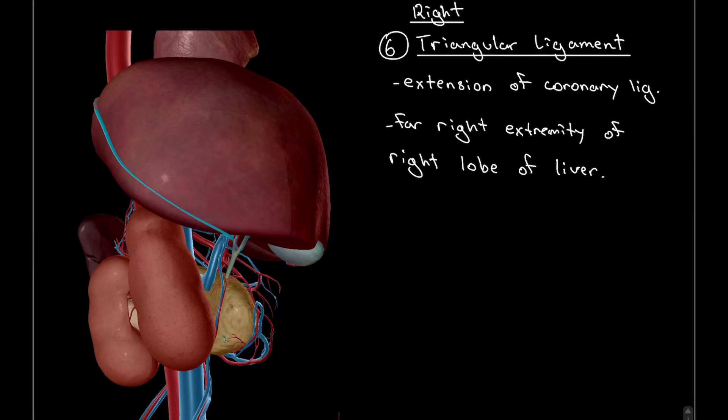And moving on to the last one, the second triangular ligament—the right triangular ligament. It sits on the right extremity of the right lobe and attaches directly to the abdominal wall.